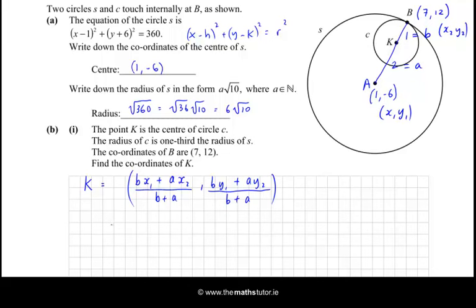So now we sub all of that into our formula, and we get B times x₁, so that's 1 times 1, plus 2 times 7, all over 1 plus 2, which is 3. And the y-coordinate then is 1 times -6, plus 2 times 12, all over 3.